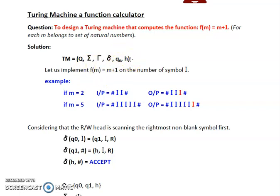The HALT state is that particular state where the Turing machine halts. In order to understand these tuples in more detail you can go back and watch our video on introduction to Turing machine.